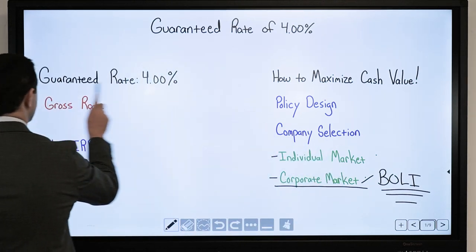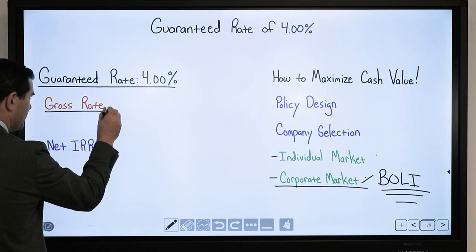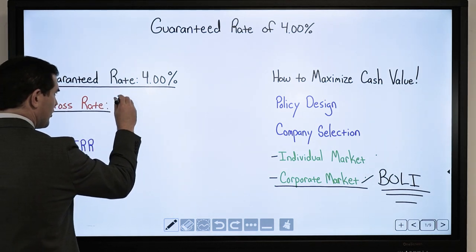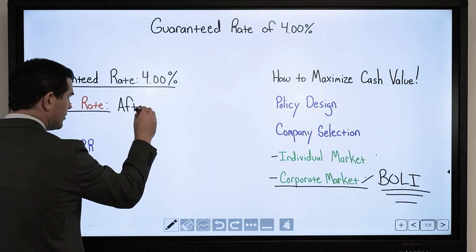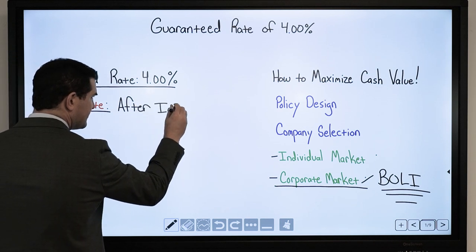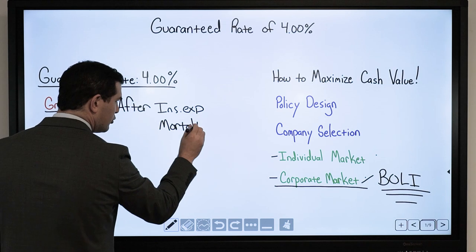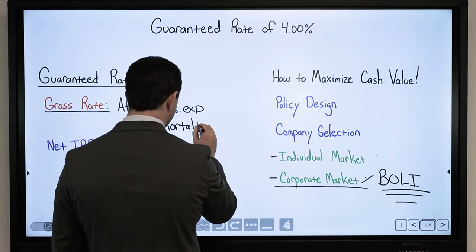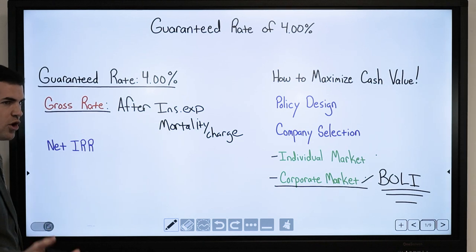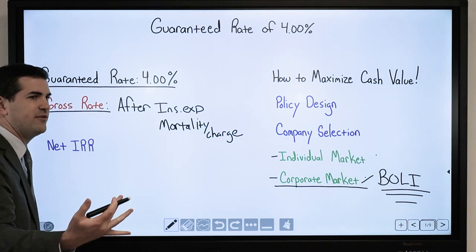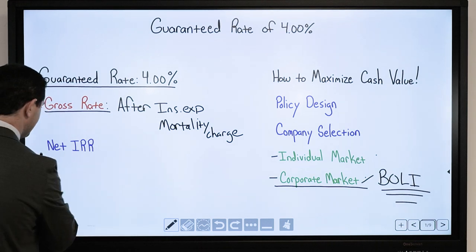So again, with a guaranteed rate of 4%, the key point here: it is a gross rate, credited after — always remember this — insurance expenses and mortality charges. If you're interested in what you are actually earning, that's what we want to look at: the net internal rate of return.